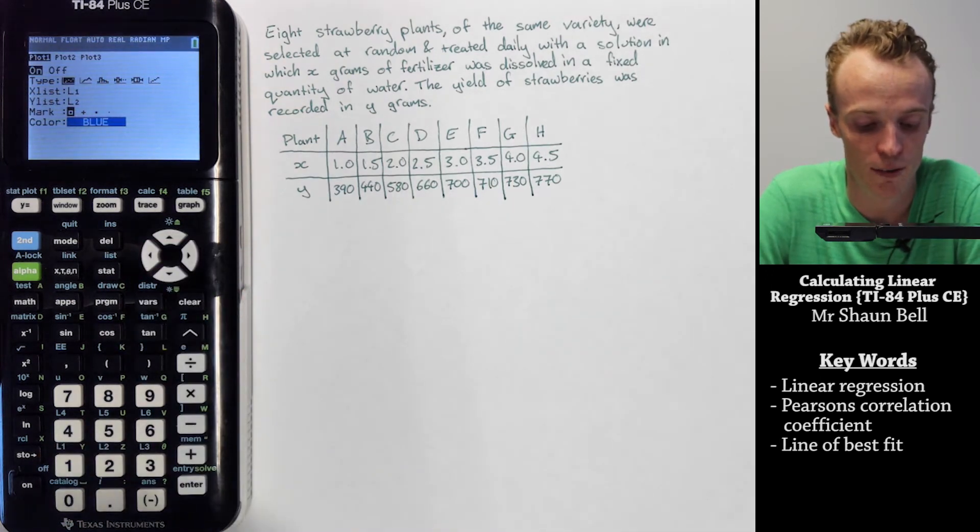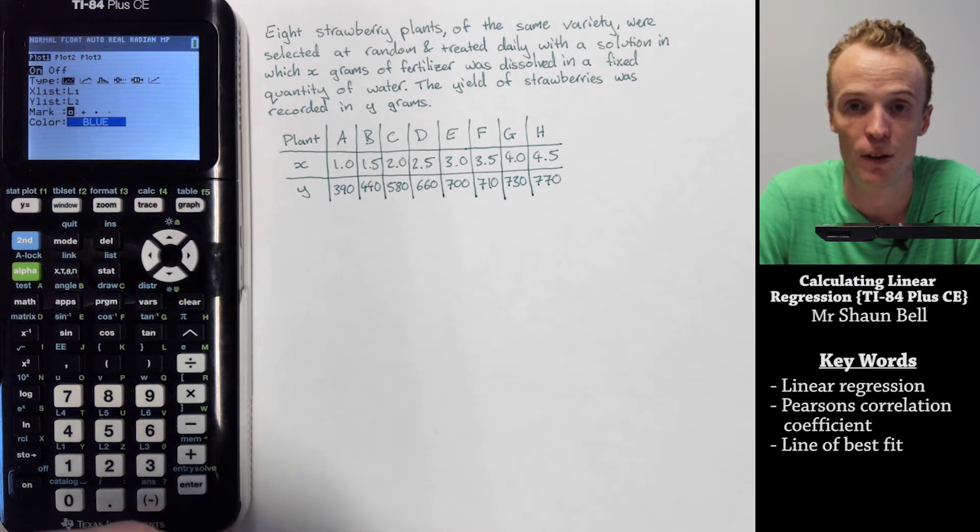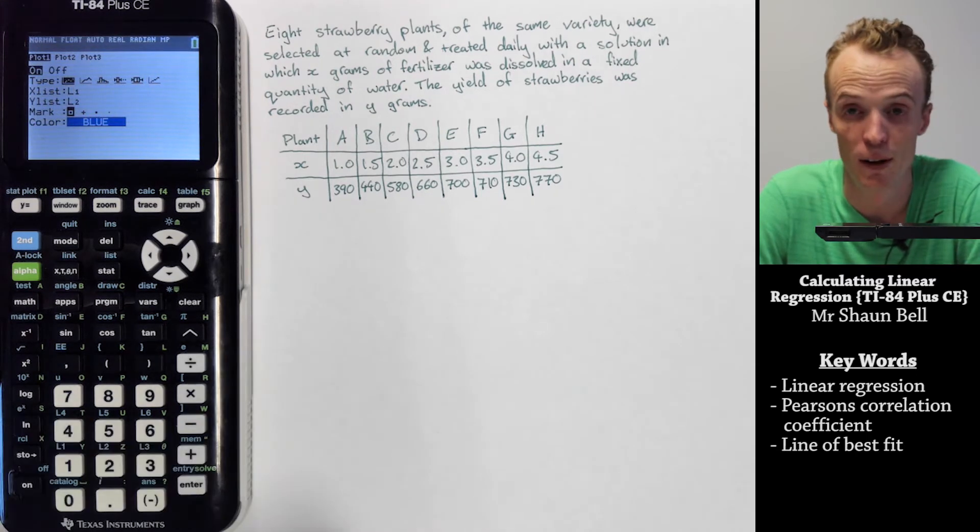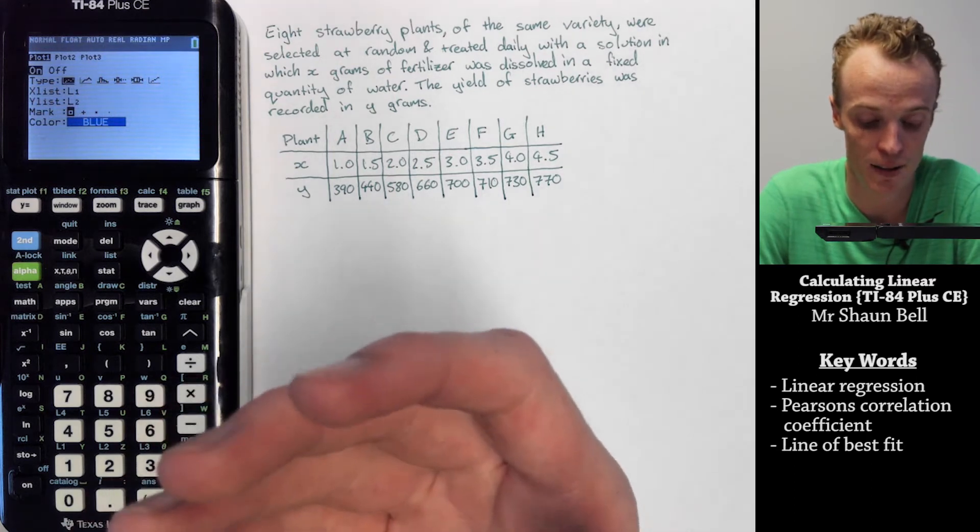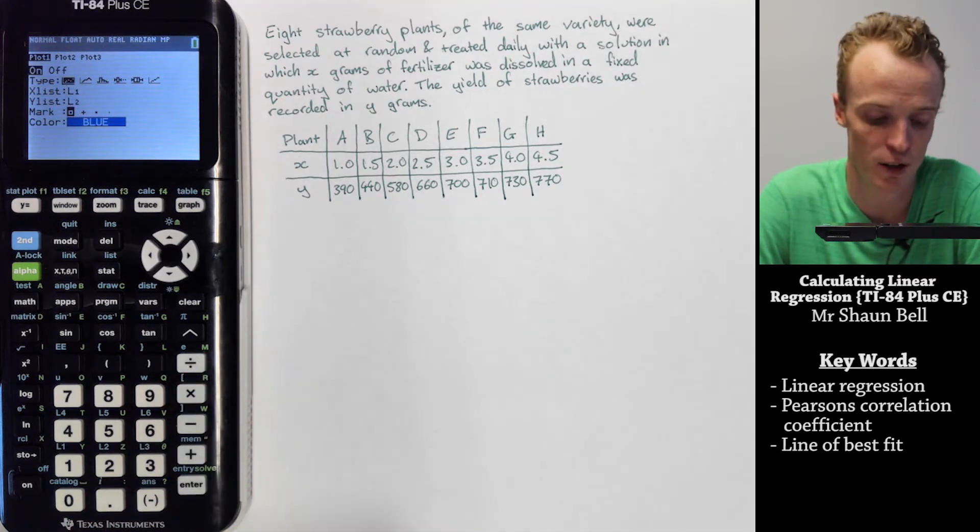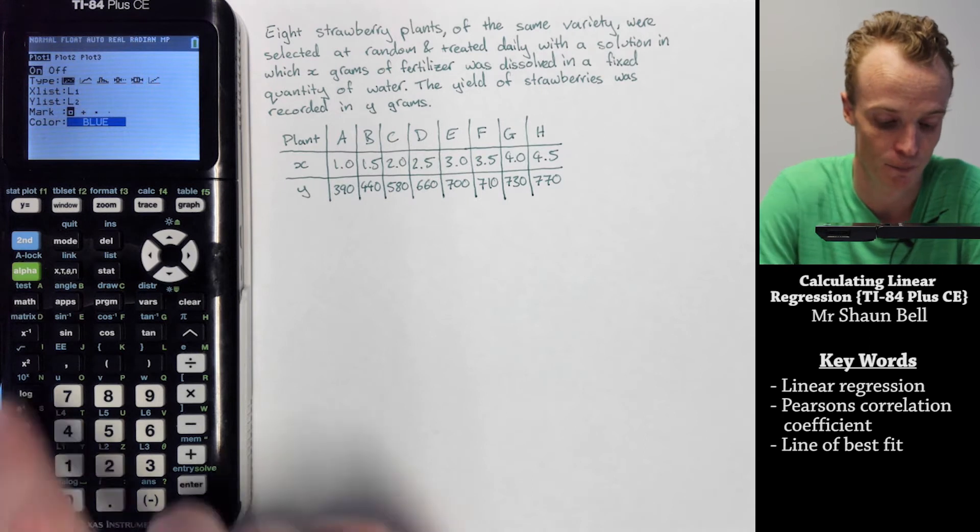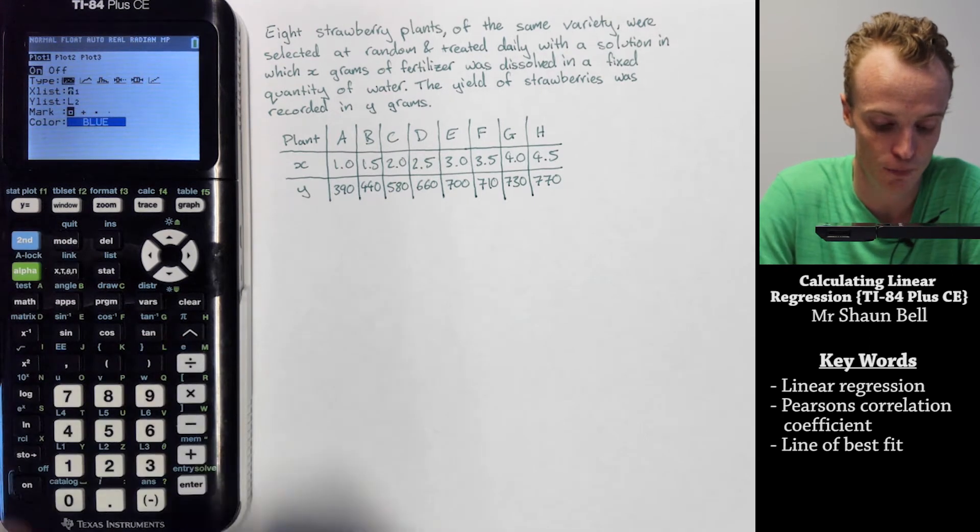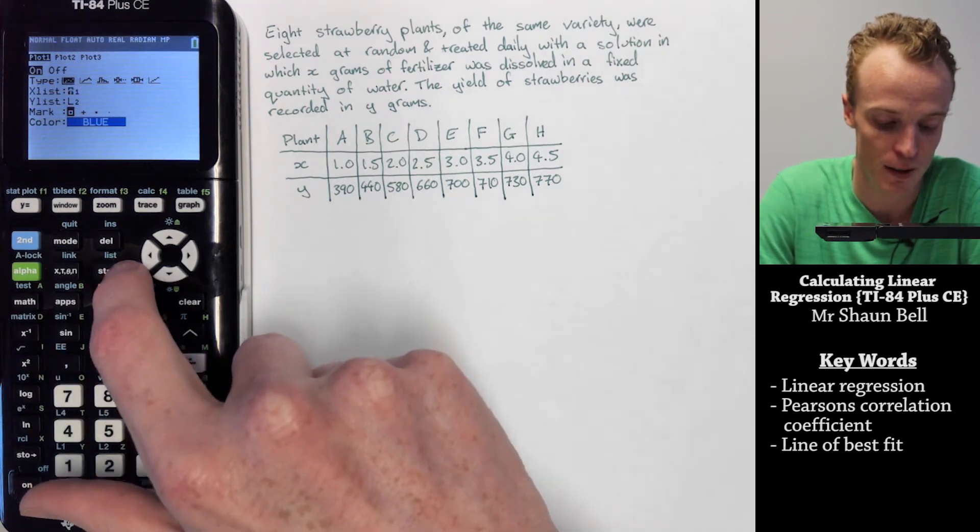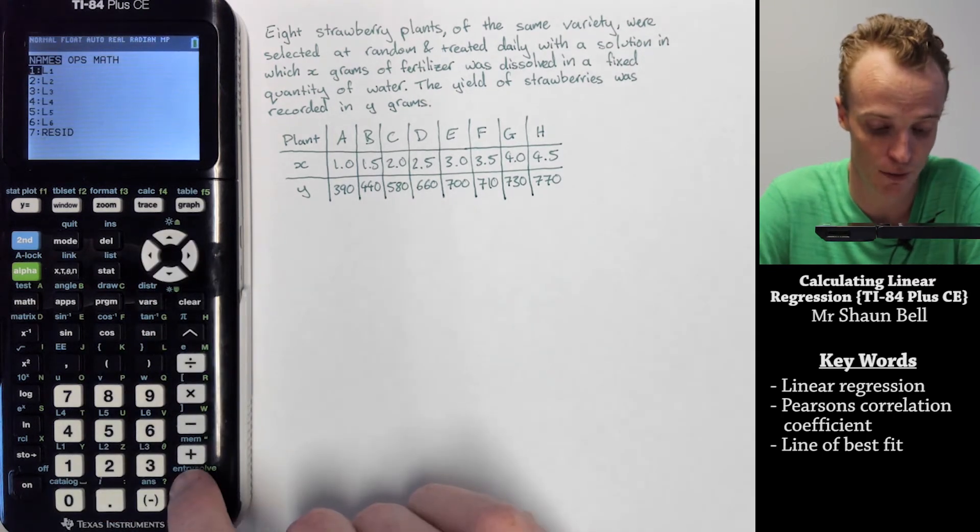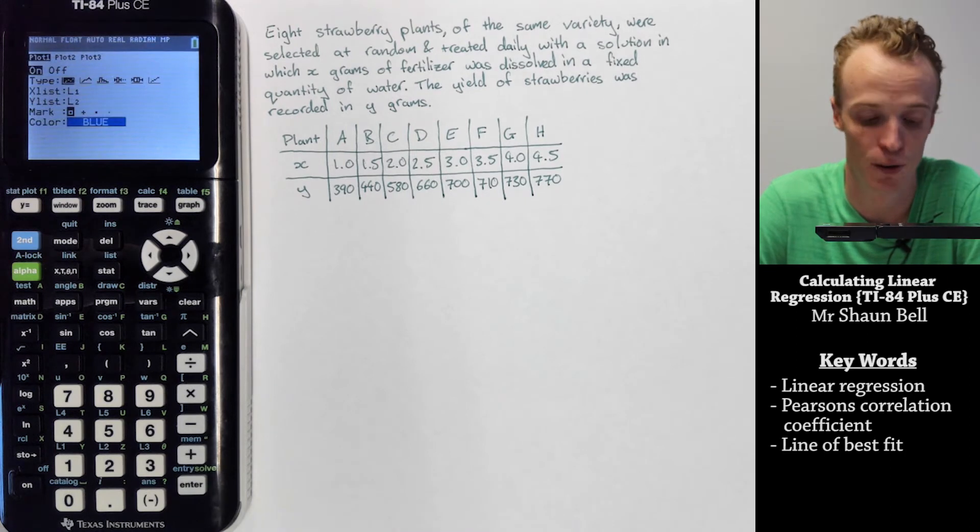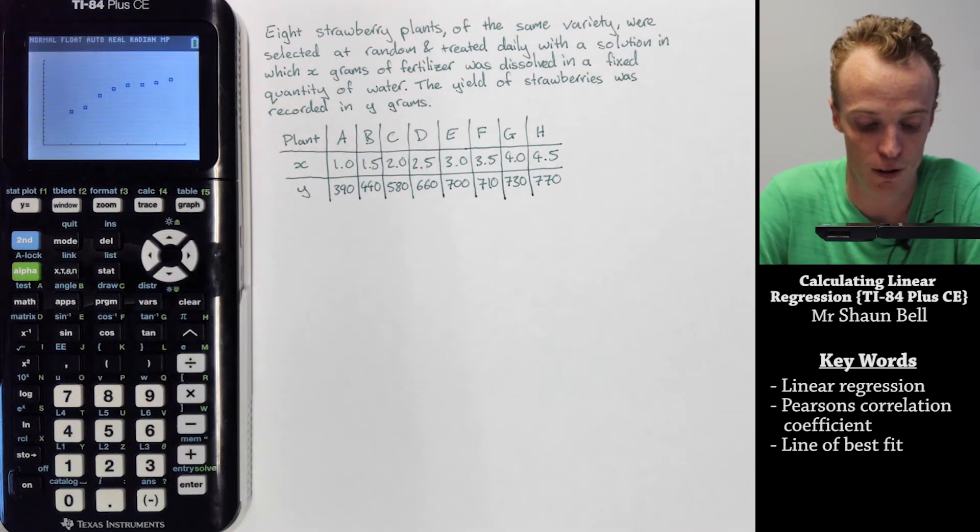It will then ask what list is going to be the x values. It defaults to list 1 being our x values, which is true. If you need to change which list is your x values, you go to the second function and the stat button above it is the list, and you select which list the x values exist in. In this case, it's list 1 for me. You do the same for the y list, and once you've done that, you can hit the graph function.